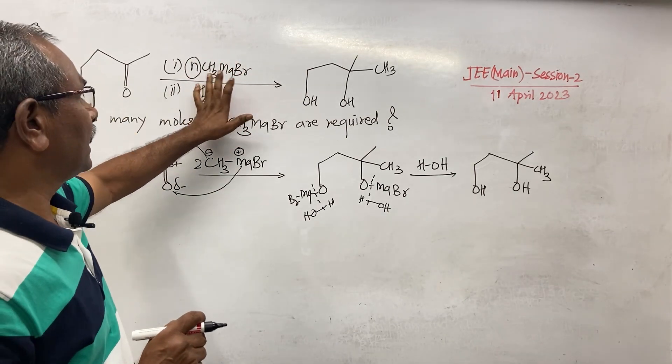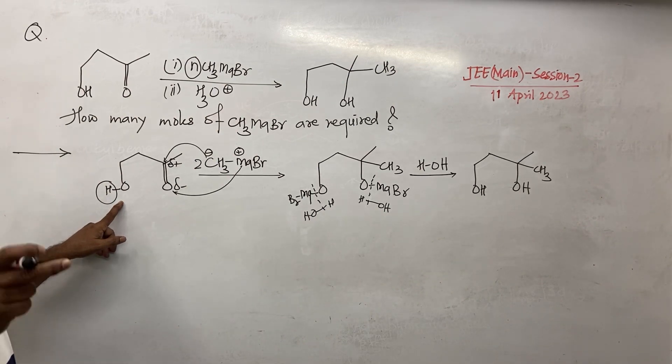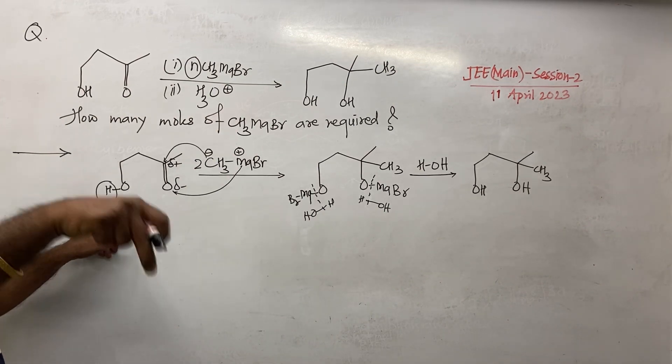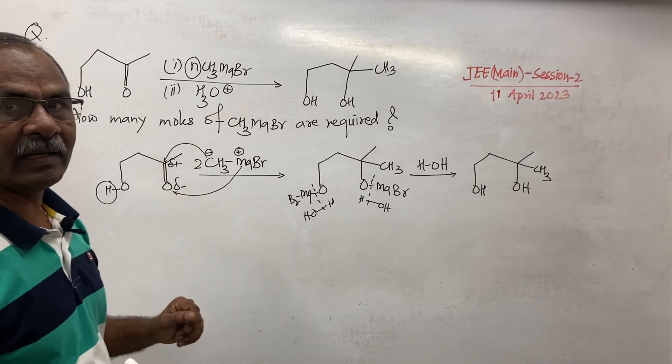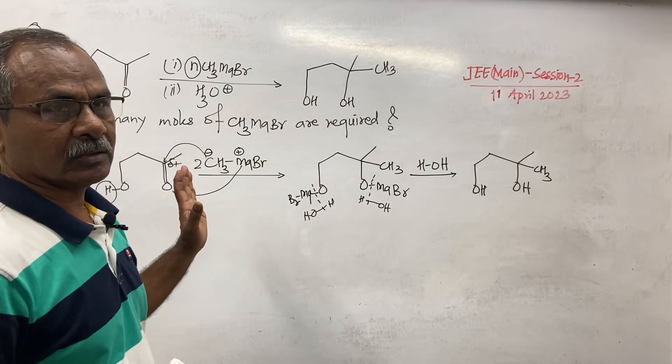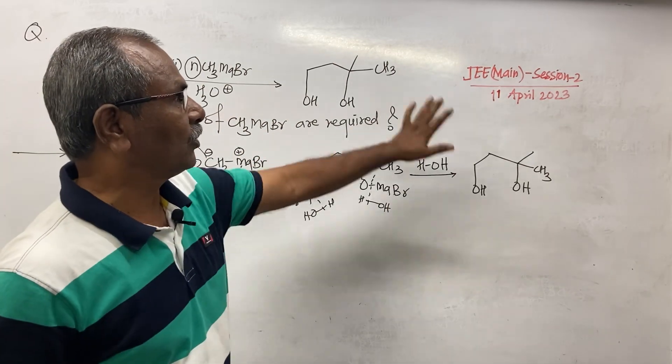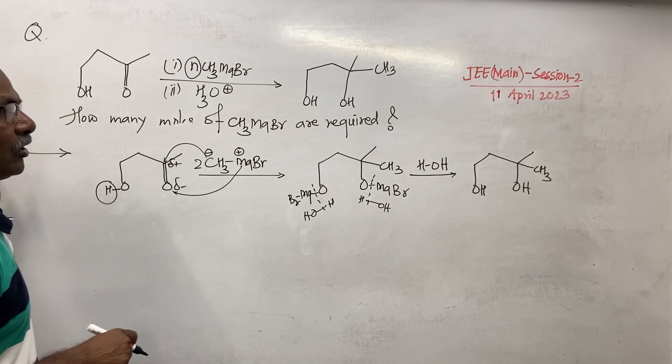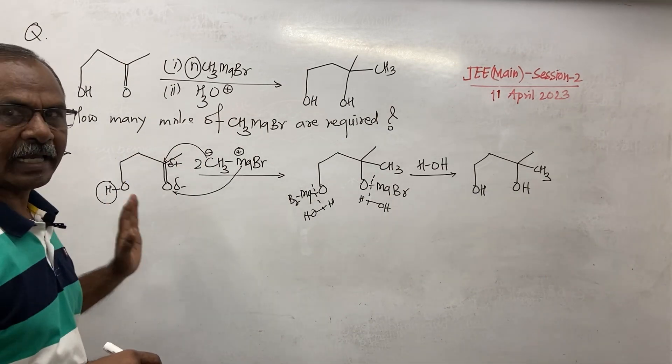But if you know each and everything regarding the Grignard reagent, then Grignard reagent reacts with the hydrogen attached to oxygen, hydrogen attached to nitrogen also, and it forms corresponding hydrocarbons. So if you know all these things regarding Grignard reagent, then you can immediately or quickly find out the final product of the reaction. Thank you.